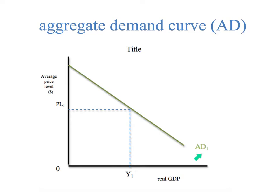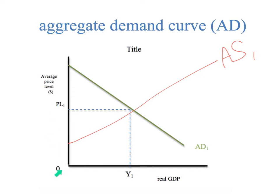Here's a blown-up version of the graph — average price level and Y1. This is the beginning of a Rule of 11 diagram. You can see all the compulsory components you're going to need: average price level, the currency, PL1, zero, Y1, real GDP, aggregate demand 1, short-run aggregate supply curve 1, and potentially the long-run aggregate supply curve from a neoclassical standpoint.